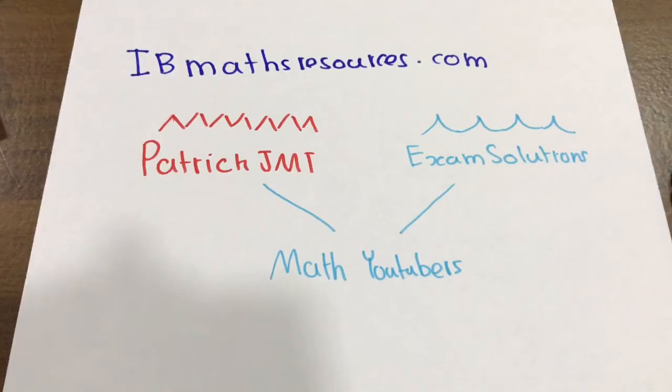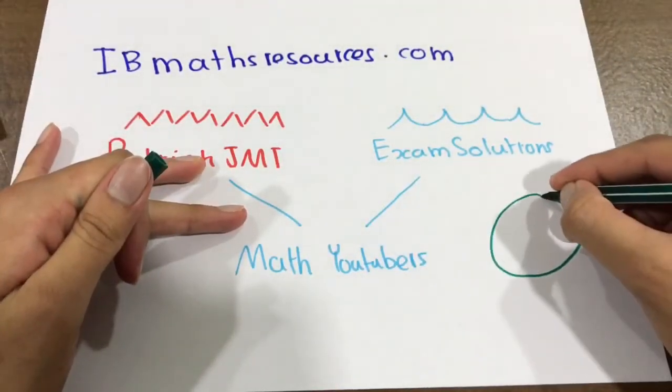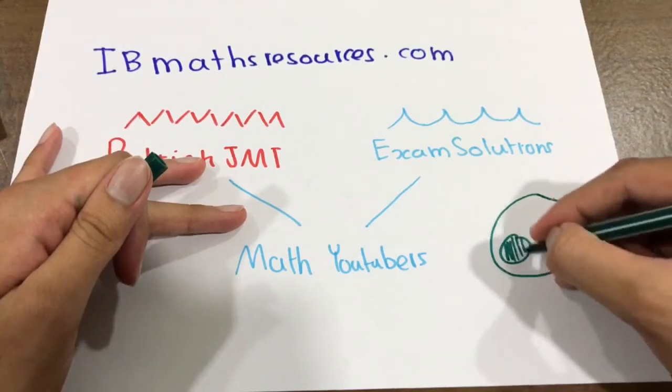The best part is that it's all indexed categorically. So you could do a YouTube search of, let's say, how to integrate this, and a Patrick JMT video could come up. But you have to understand that Patrick JMT and Exam Solutions, they're not making videos specifically for the IB syllabus. They have so much content, and the IB portion of the content is just a small subset.